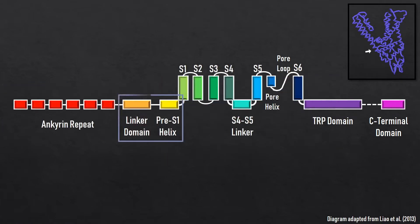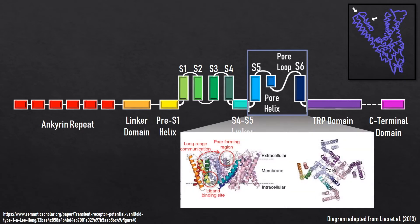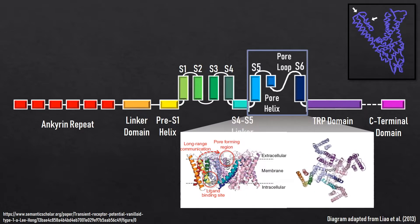A linker domain connects this segment to the pre-S1 helix. The S4-S5 linker connects the S4 and S5 helices. A P-loop composed of a short helix and a loop link the S5 and S6 helices. Arranged radially, the four adjacent P-loops of all the subunits together with the S5 and S6 helices form a central pore and selectivity filter through which ions pass through.